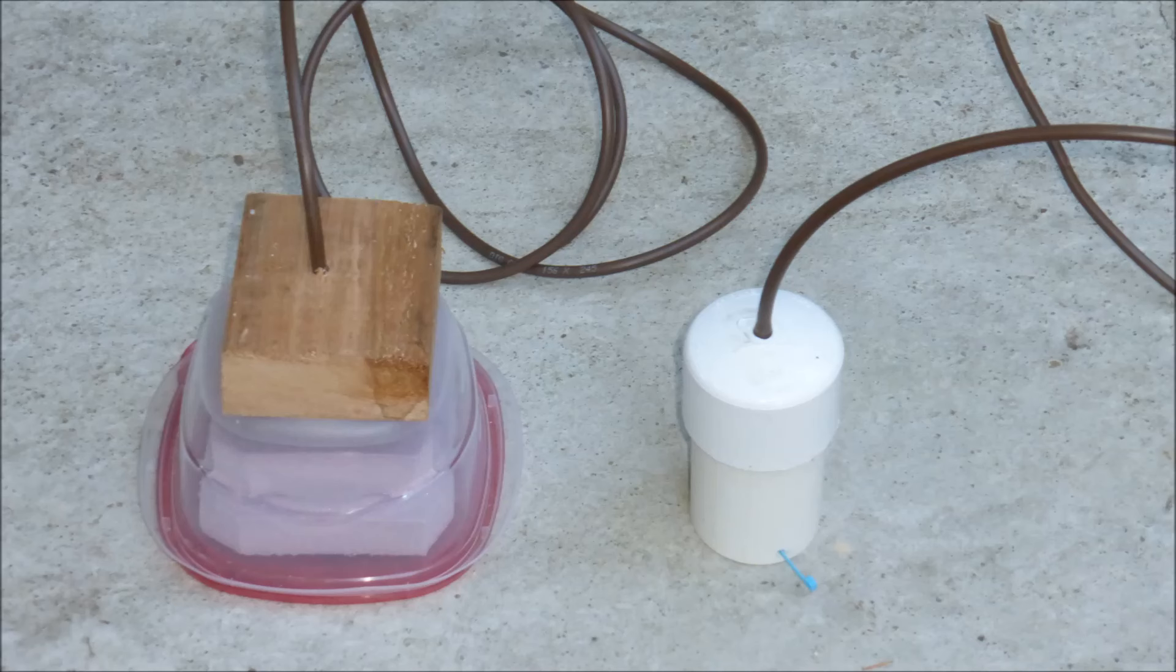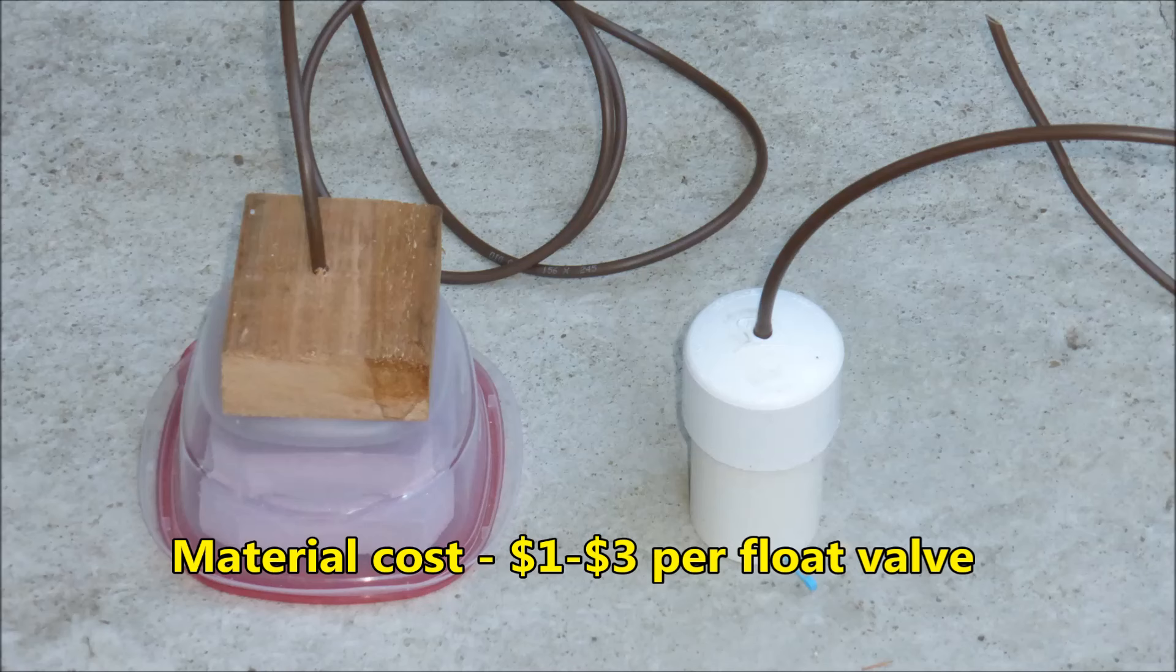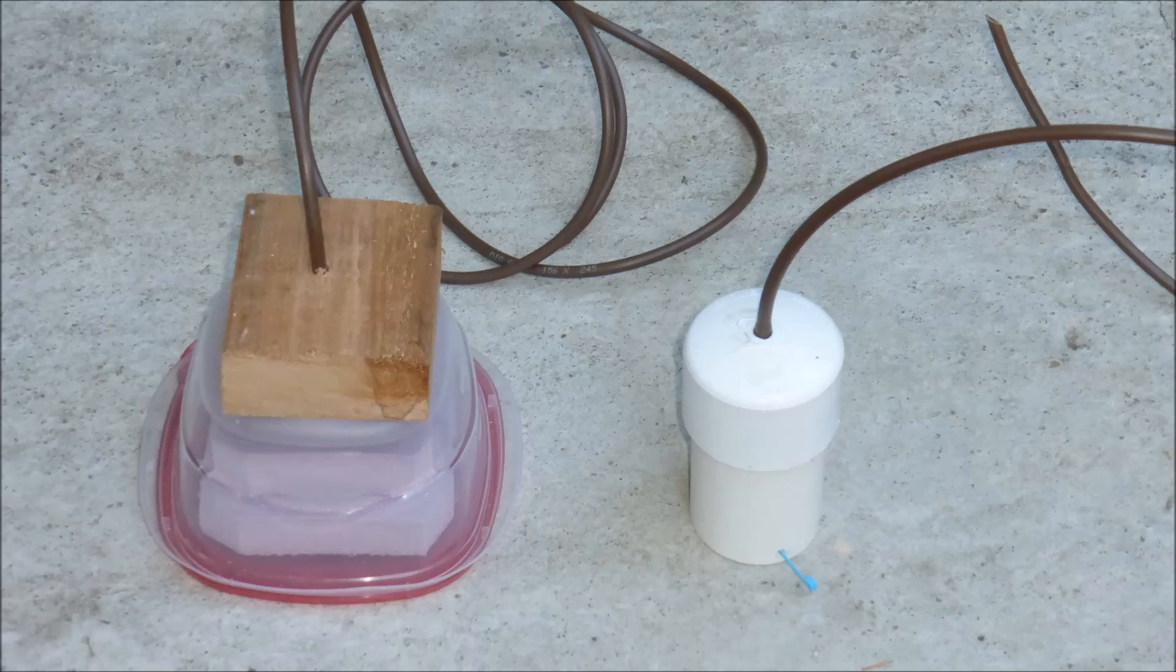Well there you have it. Two working float valve models. Both are enclosed so it will be difficult though not impossible for roots to get into the float valve and clog the mechanism like what commonly happens to many lever type designs. Materials for these float valves cost from about $1 to $3 per float valve. They are economical enough that you can afford to install one in every growing container.